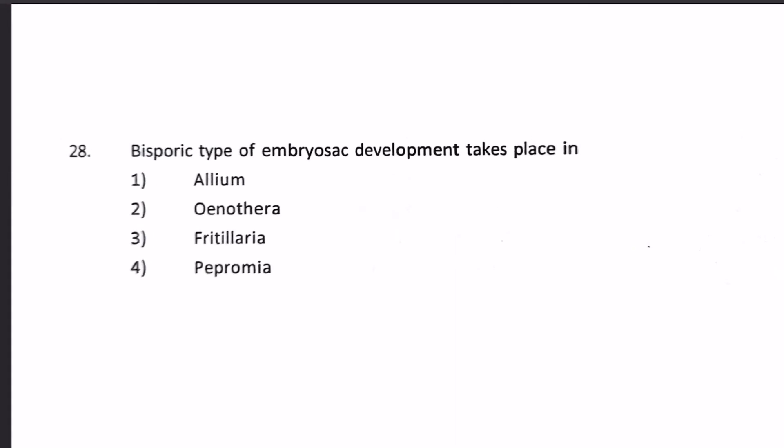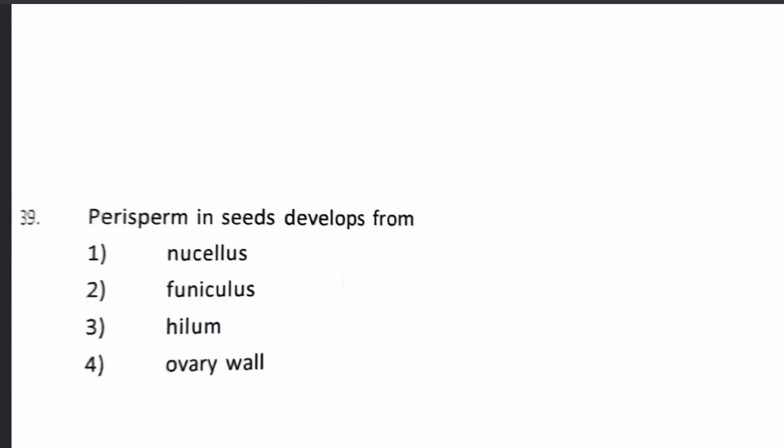Bisporic type of embryo sac development takes place in: 1. Allium, 2. Oenothera, 3. Fritillaria, 4. Peperomia. Our answer will be Allium.